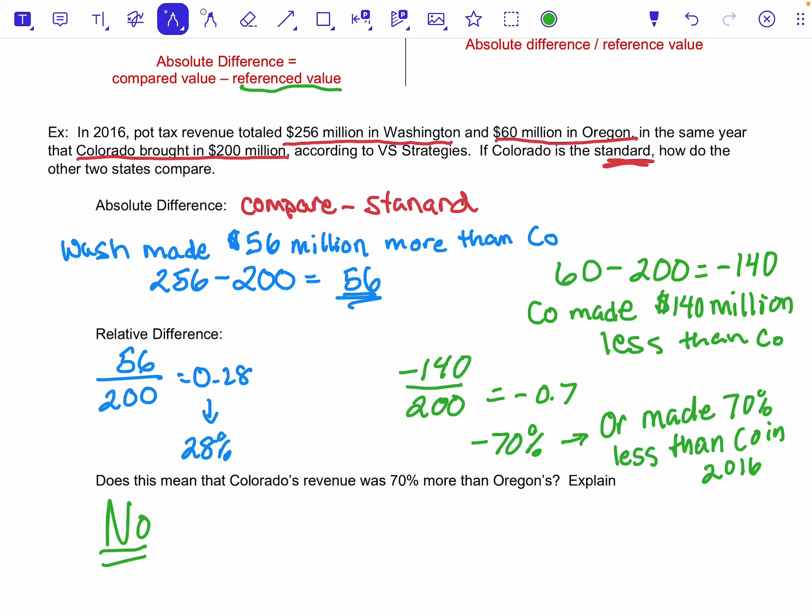Because the reference would have changed. If I wanted to compare Colorado to Oregon, then Oregon now is going to become the standard, and they made $140 million more, but I wouldn't be dividing by 200. I'd be dividing by that 60.